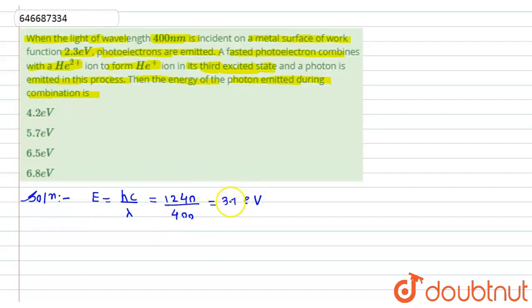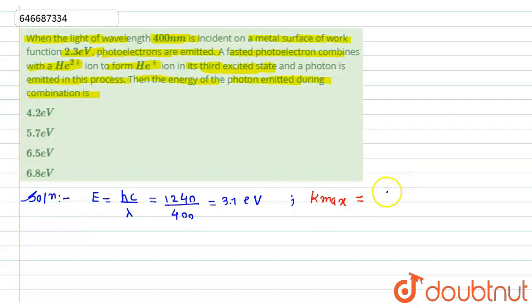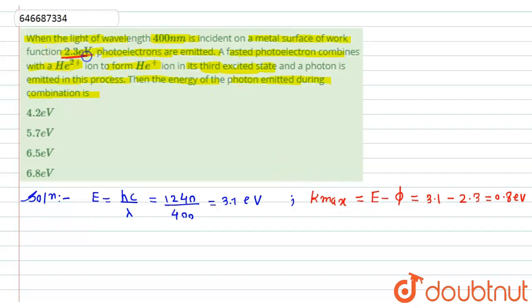Now, when light is incident on a metal surface, the maximum kinetic energy is given by K_max = E − φ (energy minus work function). So K_max = 3.1 eV − 2.3 eV = 0.8 electron volt. The work function of 2.3 eV is given in the question.